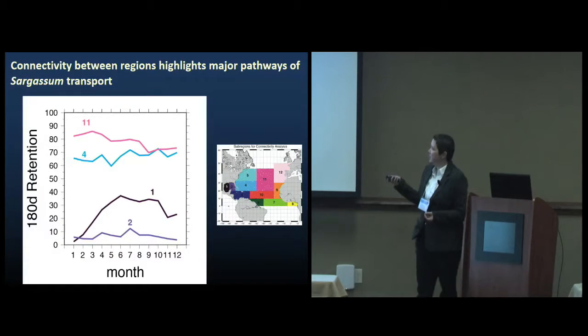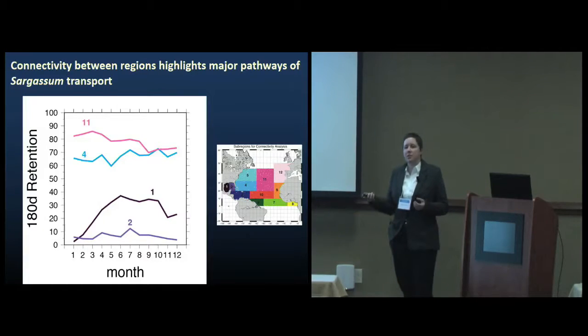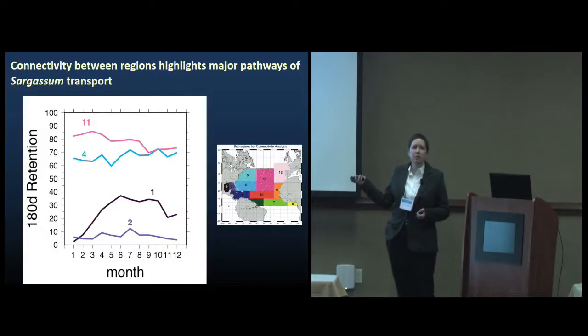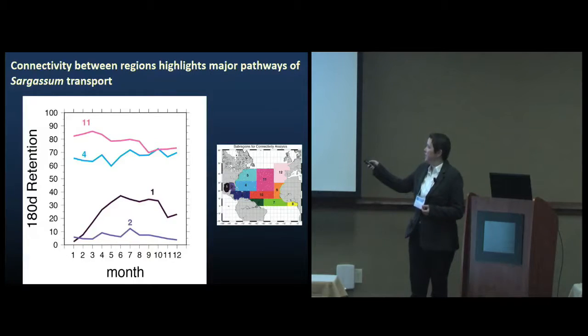Now I'm just looking quickly also at a six-month retention. This is the start month along the x-axis and the percent of particles that are retained in that region after six months. Again, you can see that the Sargasso Sea, both the central Sargasso and the southwestern Sargasso Sea, are highly retentive. And we have this big discrepancy still between the eastern and the western Gulf of Mexico.